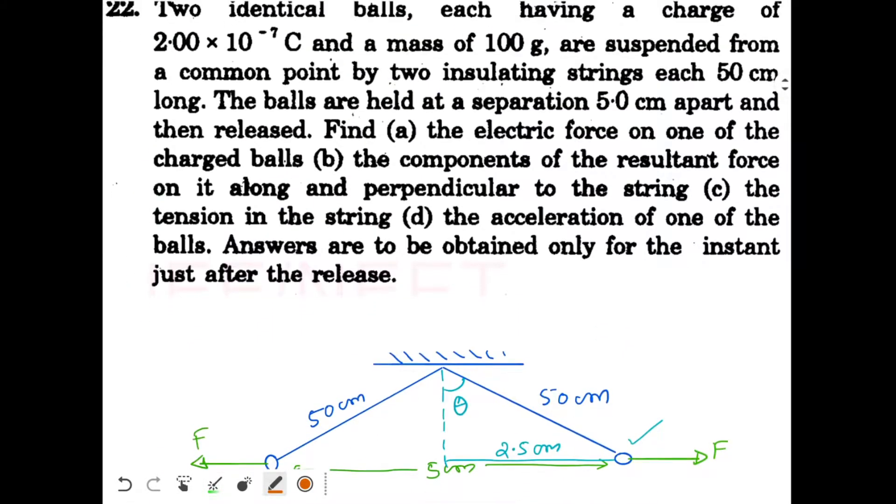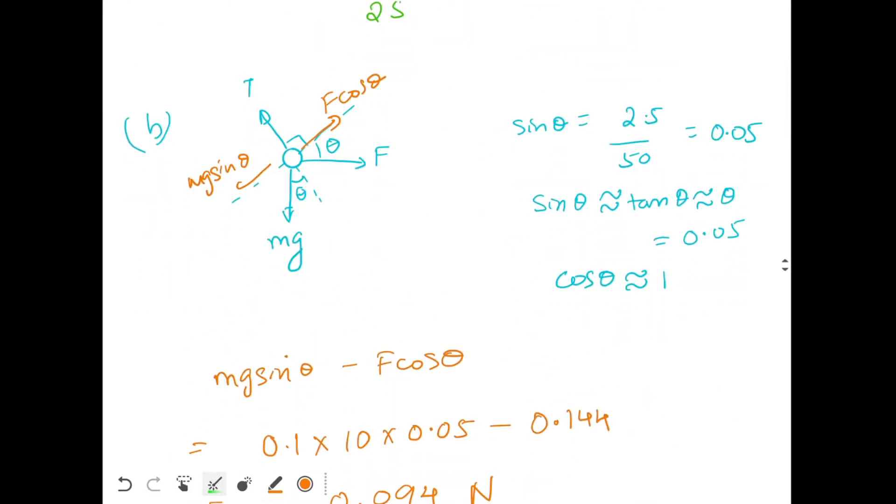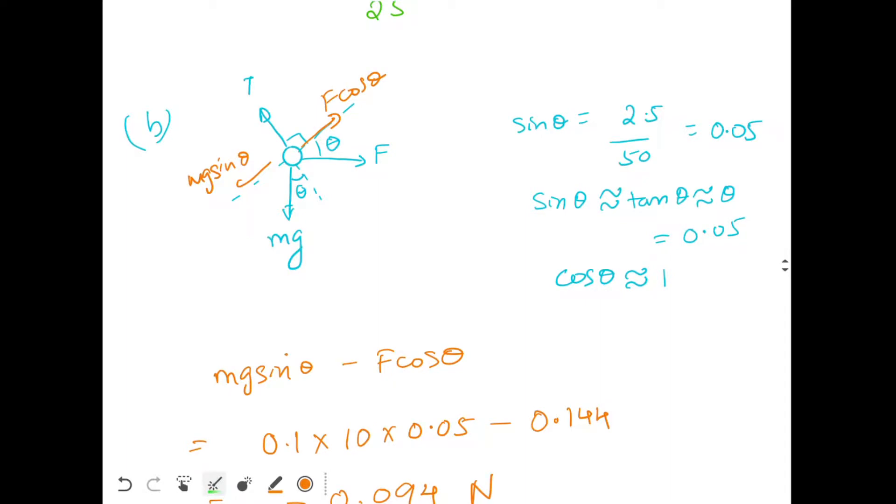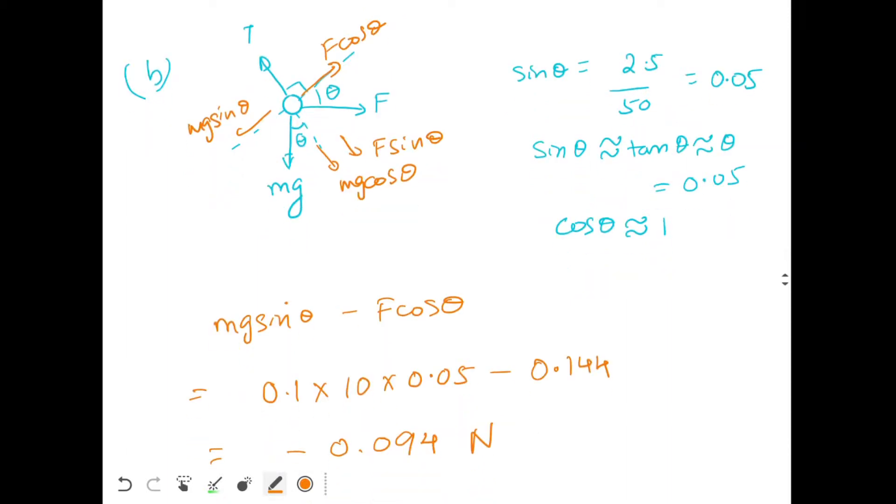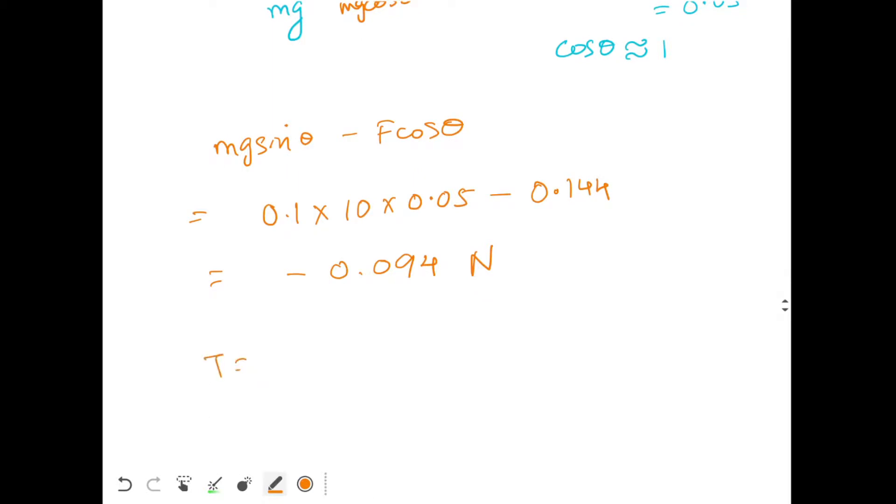Let's put the unit, 0.094 N. Now what about part C. Part C is asking the tension in the string. That's very easy. Again we use the same diagram. So along this direction net force is zero. So T upwards should balance mg cos theta plus F sin theta. T equal to mg cos theta plus F sin theta.